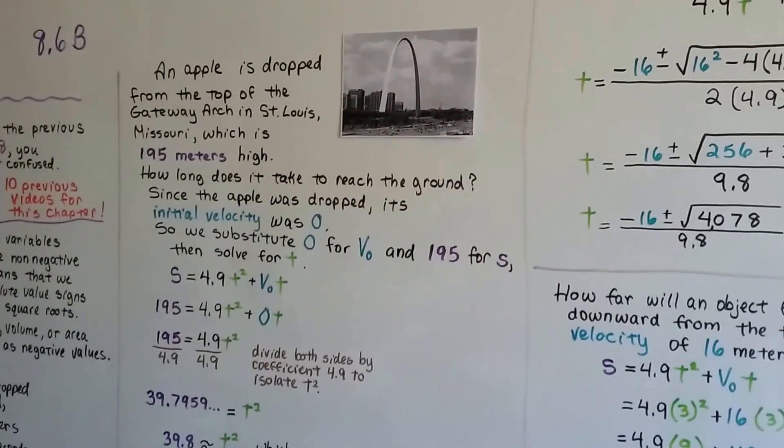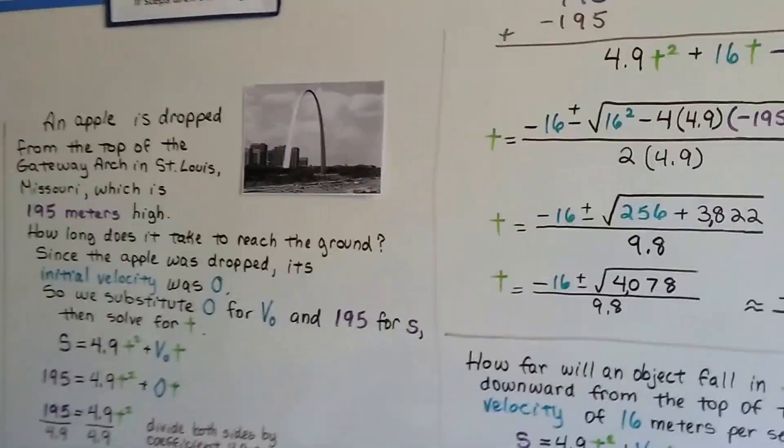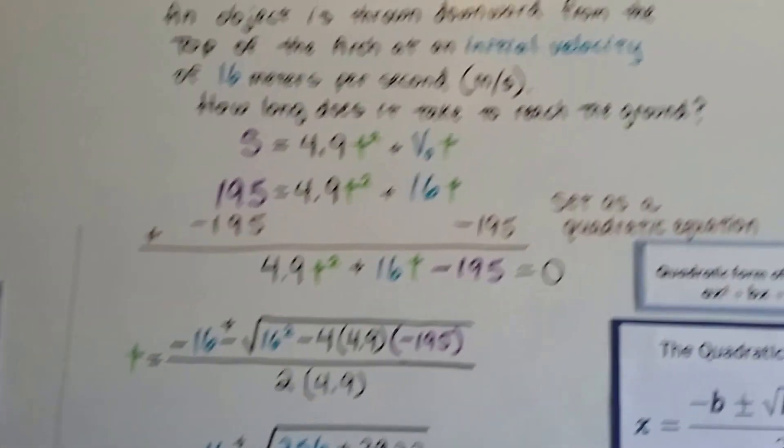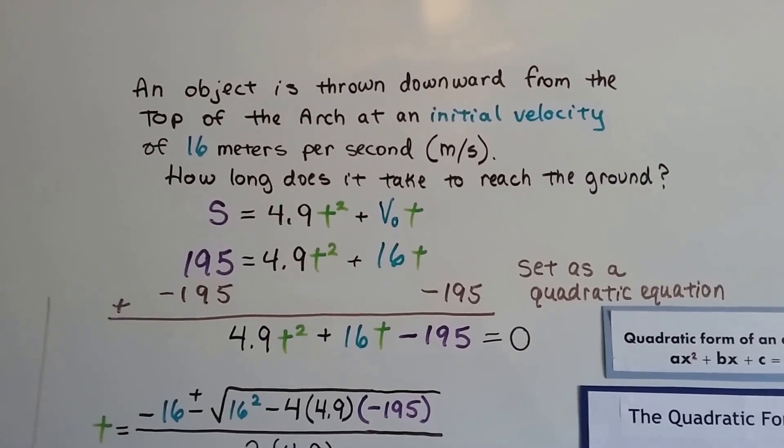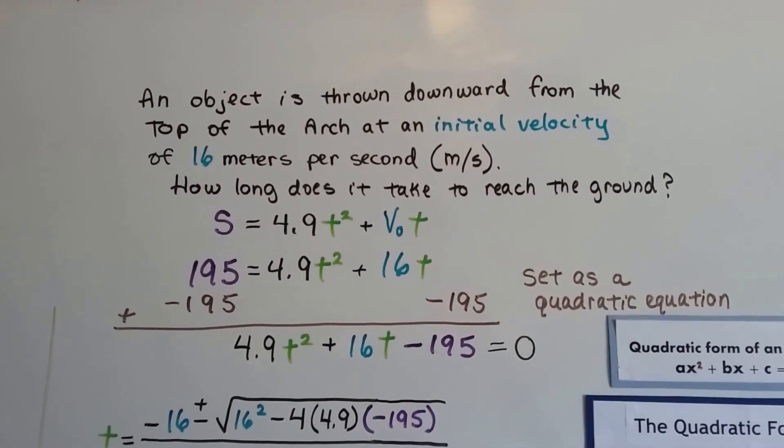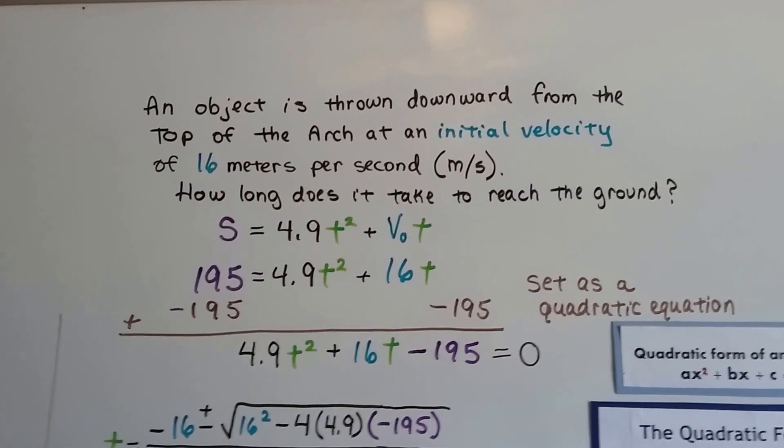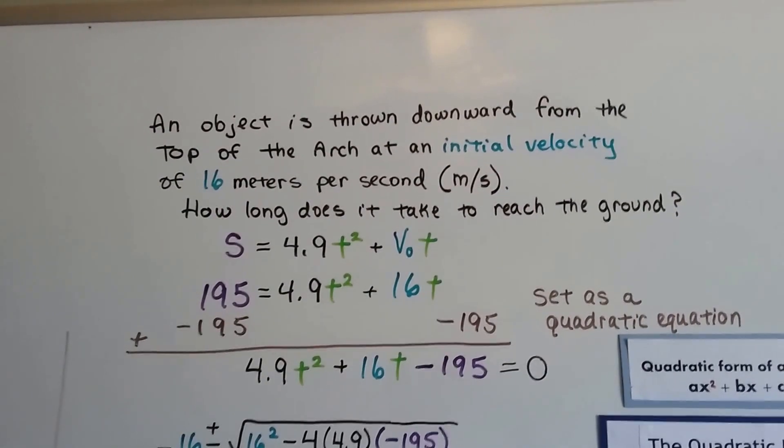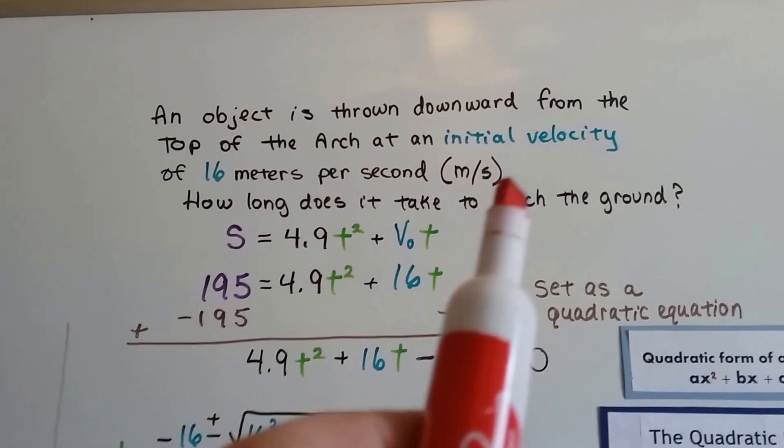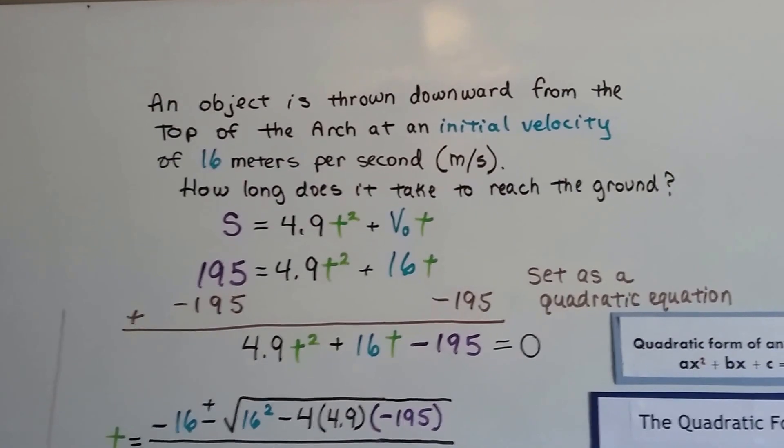We're going to continue using our St. Louis gateway arch. Now an object is thrown downward from the top of the arch at an initial velocity of 16 meters per second. Before we had a zero initial velocity. Now we've got one at 16 meters per second, which is written as m/s. So how long does it take to reach the ground?